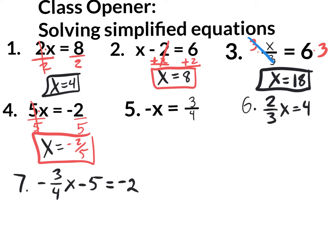Number 5 is so easy that you might get confused. You don't want a negative x. The goal is to get x by itself — you don't want the negative sign. So we could multiply both sides by negative 1, or divide both sides by negative 1. The bottom line is you want to change it to a positive x. So if you change it to a positive x, it's going to change to a negative 3 fourths.